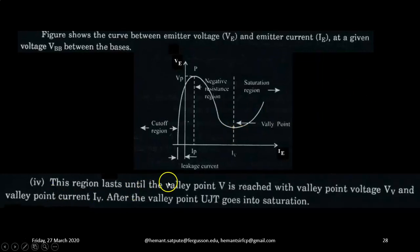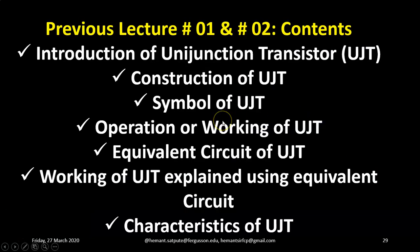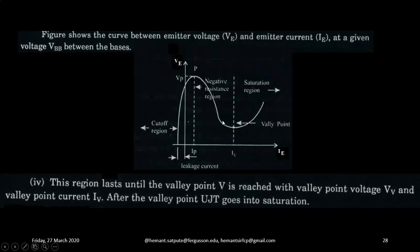This region lasts until the valley point V is reached with valley point voltage VV. So this is the valley point voltage VV and valley point current IV. So this is valley point current and here there will be a valley point voltage. After the valley point, UJT goes into saturation region. So that's all for today's lecture. Stay tuned for the next lecture in the series.